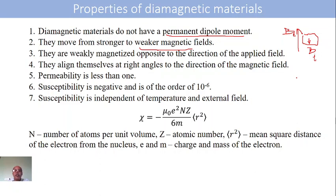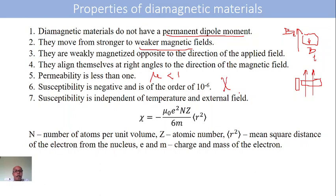They align themselves at right angles to the direction of the magnetic field when kept in a uniform magnetic field. The permeability of diamagnetic material is always less than 1 — mu is less than 1. The susceptibility of diamagnetic material is negative, of the order of 10 power minus 6, very low. Susceptibility is the easiness with which a substance can be magnetized; negative indicates it cannot be easily magnetized.